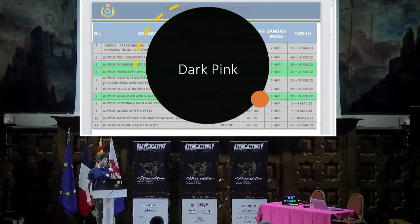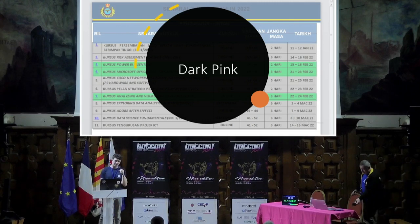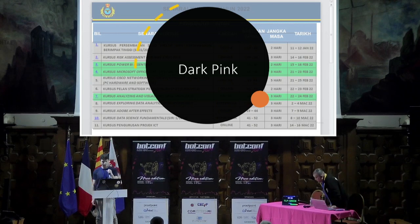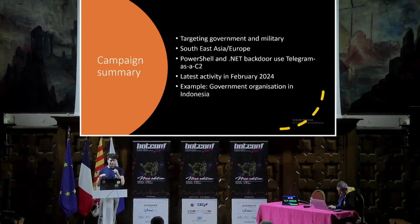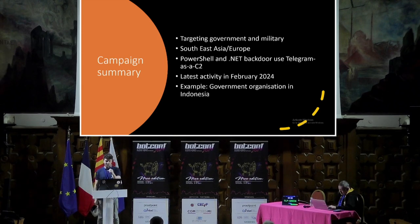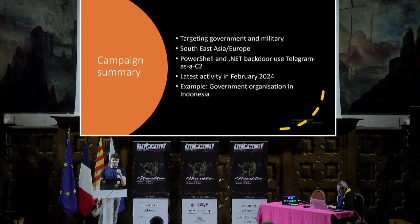Now we'll talk about DarkPink. DarkPink is an APT discovered in December 2022 by Group-IB. They were targeting mostly Southeast Asian governments and military organizations, but also a few in Europe. They had a quite advanced toolkit, but the main focus today is the PowerShell and .NET backdoor because it used Telegram as a C2 to receive commands and exfiltrate data. They're still active — last seen in February 2024 targeting an organization in Southeast Asia. In this example, we're using a government organization in Indonesia compromised by them.